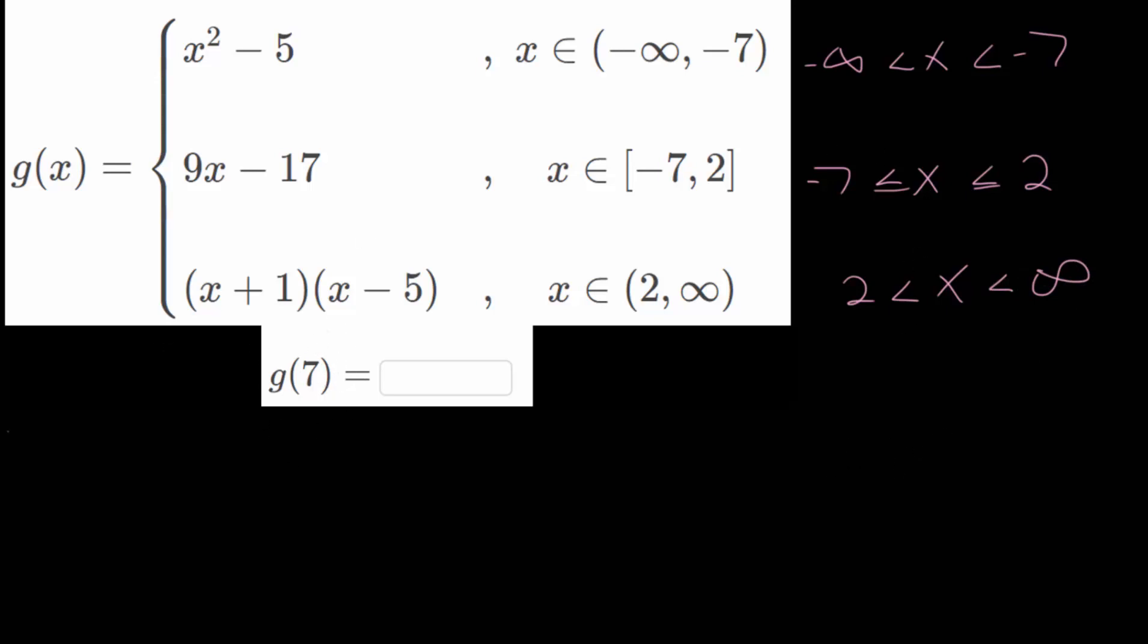So when we look at our value of x that we're looking for, an x value of 7, we just need to determine which of these outputs would we actually use, and which of these intervals is an x value of 7 actually between. So that would be this last interval here, or x values between 2 and infinity. The way to use this interval notation is that the first number, that's the lowest value in that interval. And the second number, that's the highest value in that interval. And that works the same for these as well.